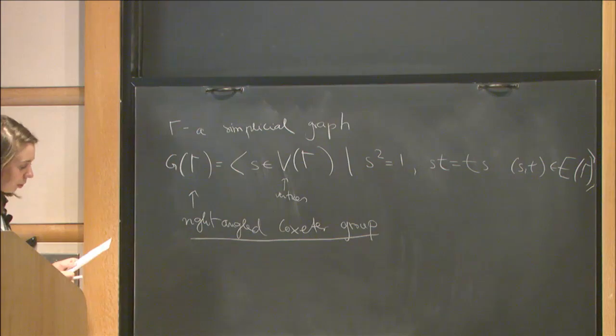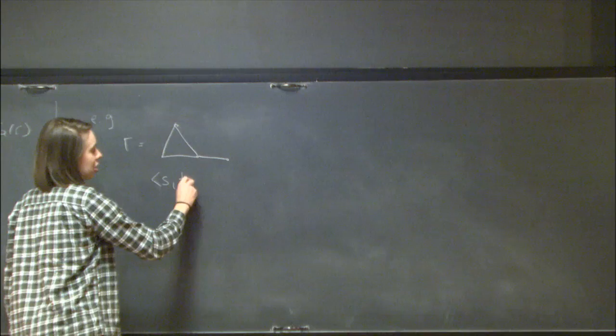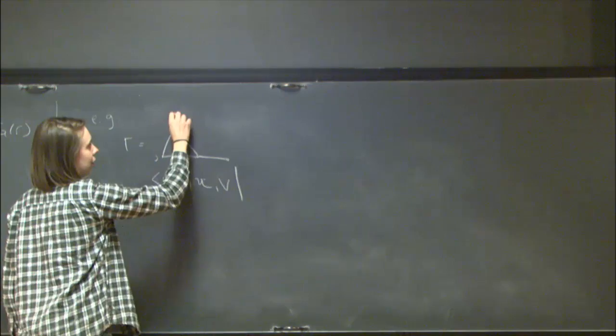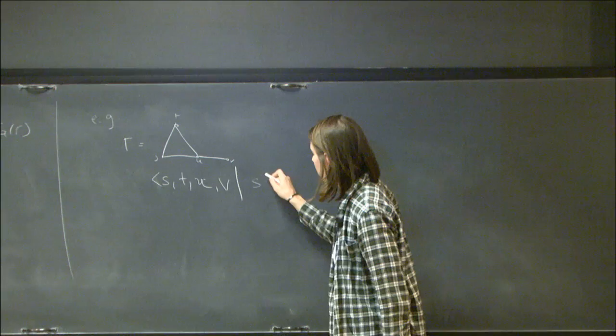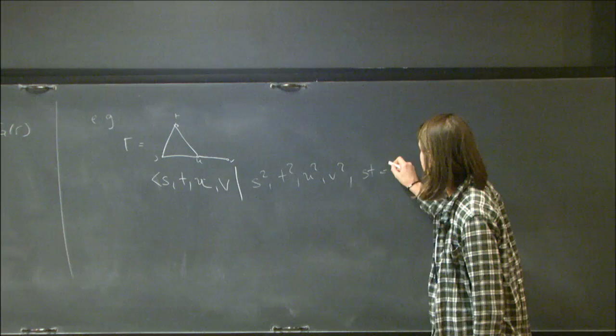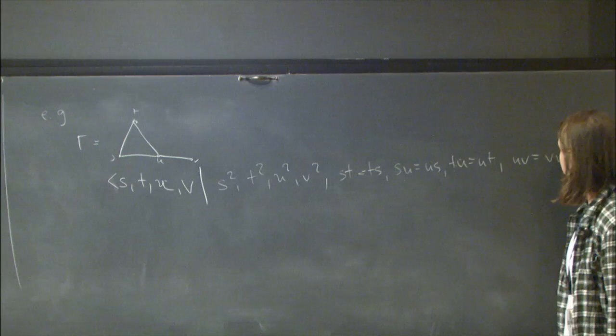As a simple example, take a graph with four vertices. The presentation has four generators, with relations s²=t²=u²=v²=1, and commutation relations st=ts, su=us, tu=ut, and uv=vu for each edge in the graph.